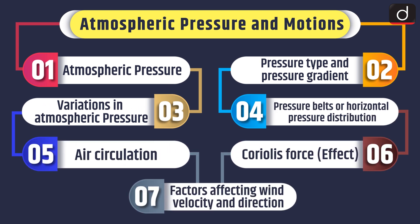First of all, we will discuss about atmospheric pressure, pressure type and pressure gradient, variations in atmospheric pressure, pressure belts or horizontal pressure distribution, air circulation, Coriolis force or effect and factors affecting wind velocity and direction.